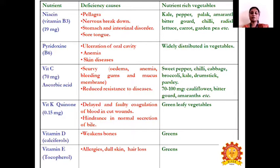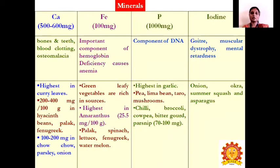Vitamin D, otherwise called calciferol, is rich in greens. Deficiency of vitamin D leads to weakened bones. Vitamin E, otherwise called tocopherol, is rich in green leafy vegetables, and its deficiency leads to allergies, dry skin, and hair loss.